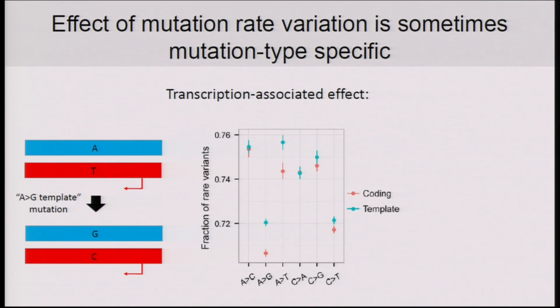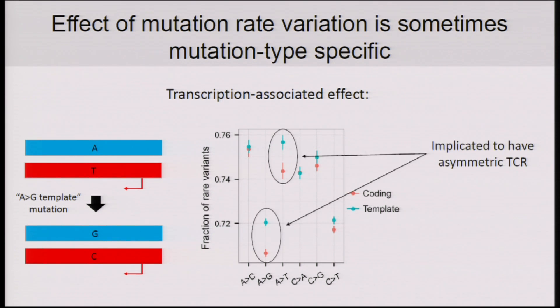Interestingly, we also saw this effect on the SFS within mutation types and not only between types. Here we're looking at whether a variant of a particular type lies on the template or the coding strand — for example, an A-to-G template mutation. A few of the mutation types actually show a significant difference between the coding and template strand. The same mutation types that exhibit this significant difference are the ones implicated in the literature to have some asymmetry in the rates of transcription-coupled repair, which could suggest a mechanism behind this.